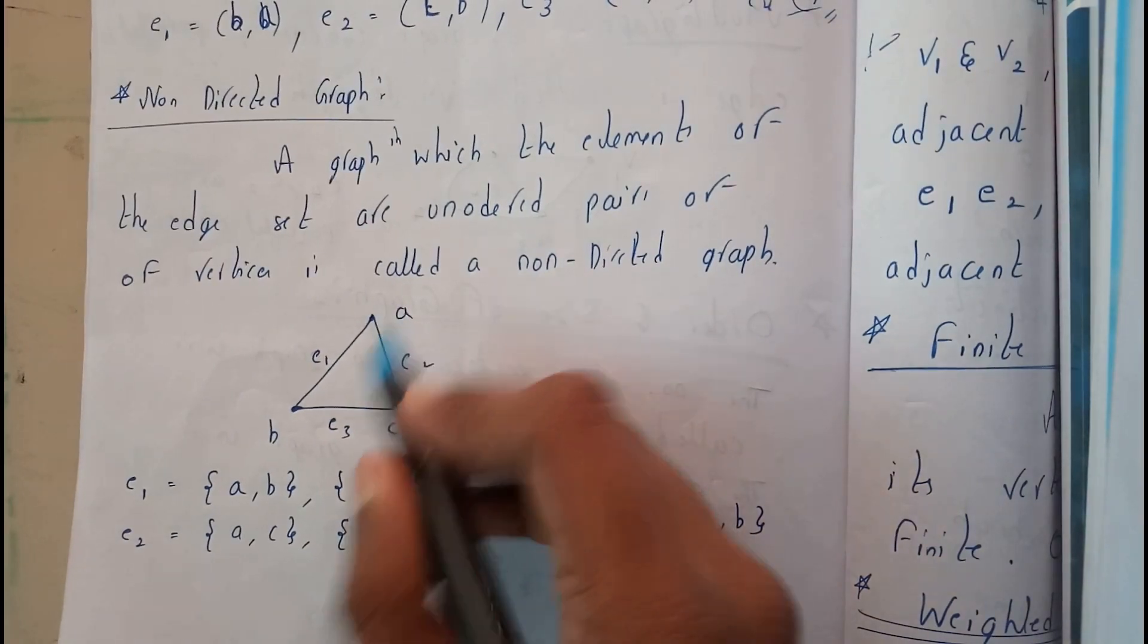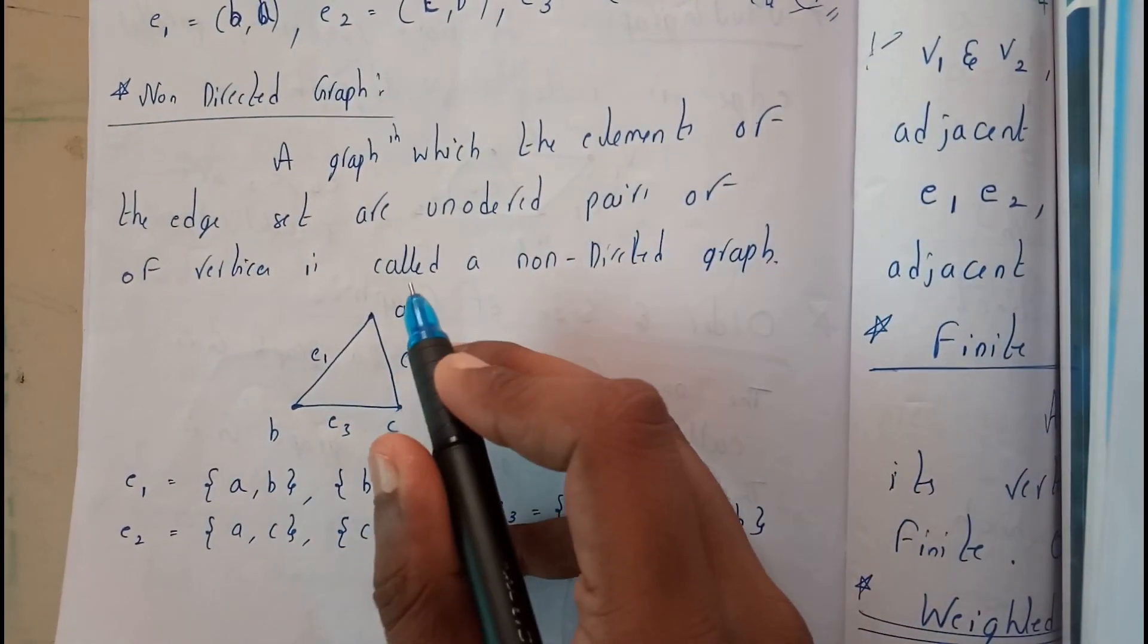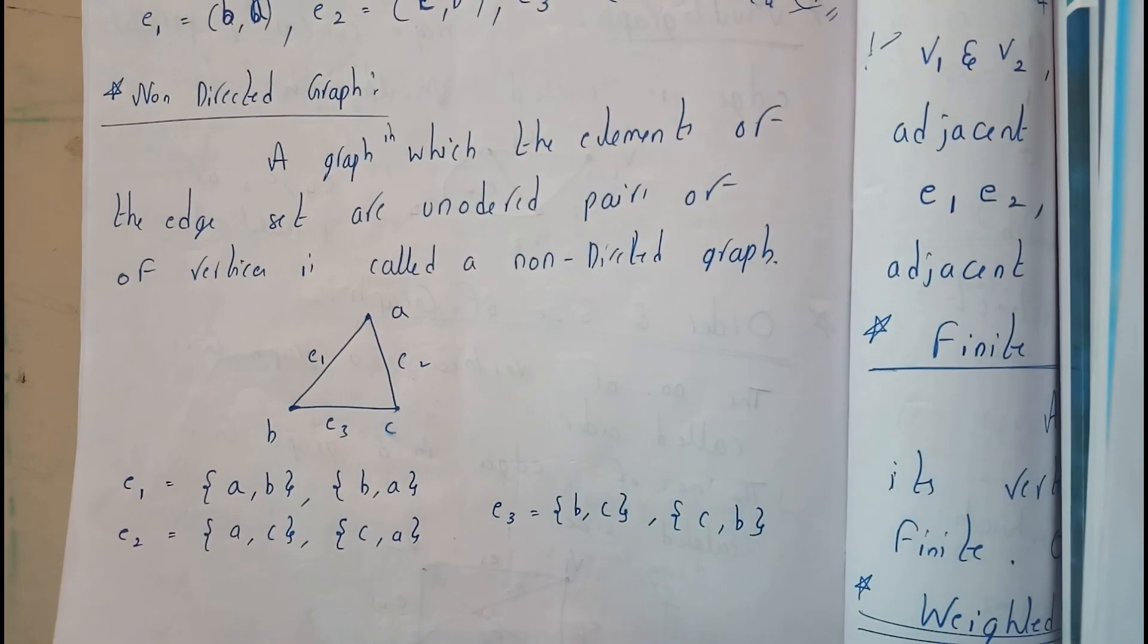Okay, here is an example of a triangle with ABC as the vertices and E1, E2, E3 as the edges.